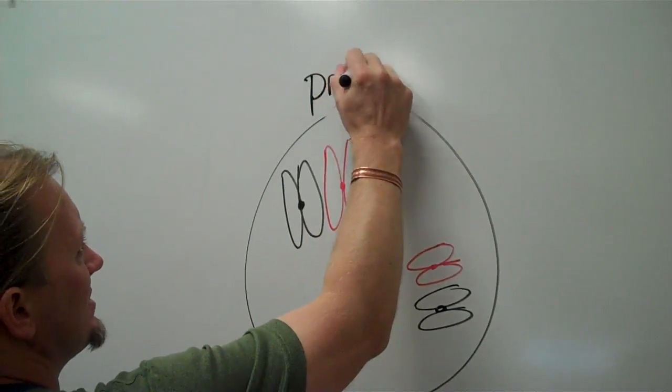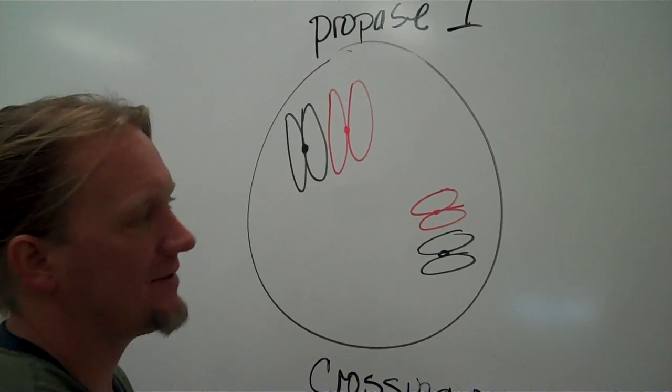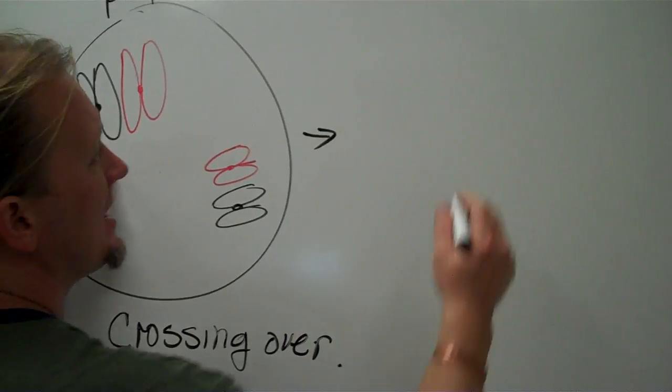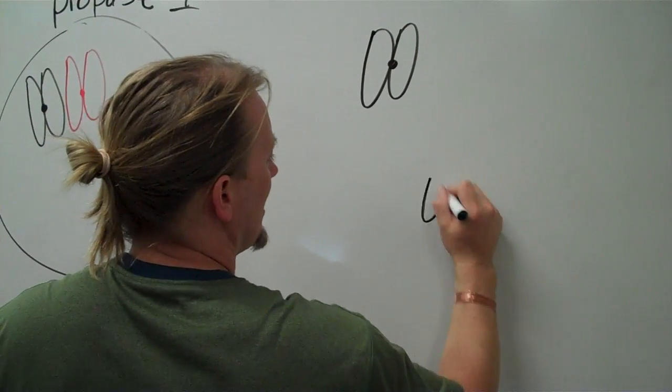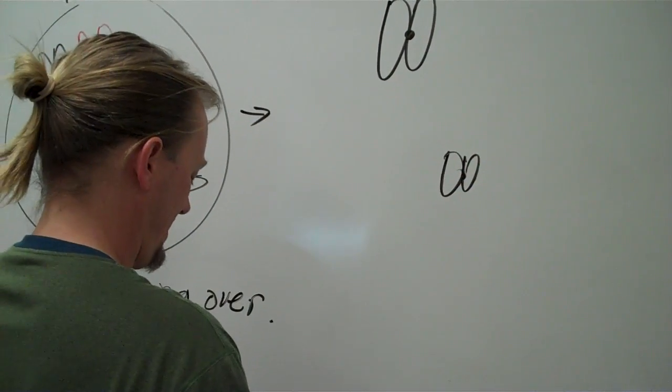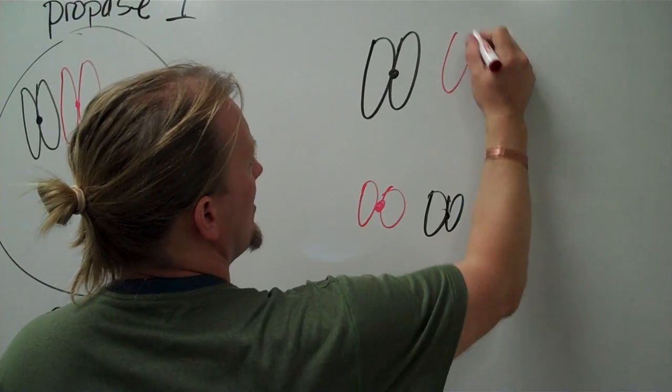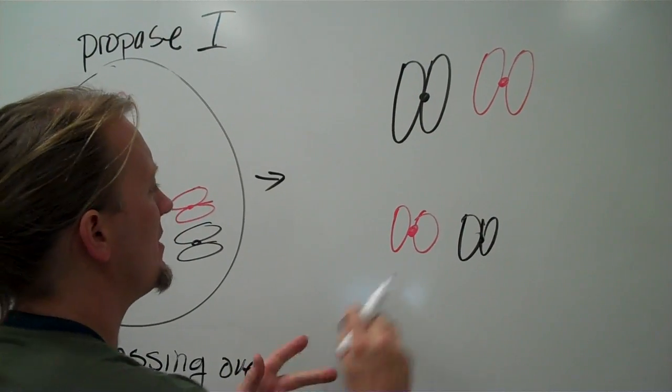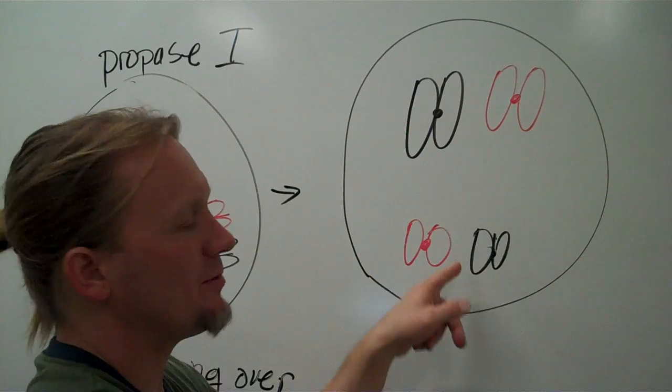This is actually prophase one. And then the only other important phase in the first half is metaphase. And metaphase, these guys then move around and they line up. And the way they line up is with their homologous pair. Now, notice this is totally different than what we saw in mitosis. They're not on their centromeres. They're with their homologous pair.